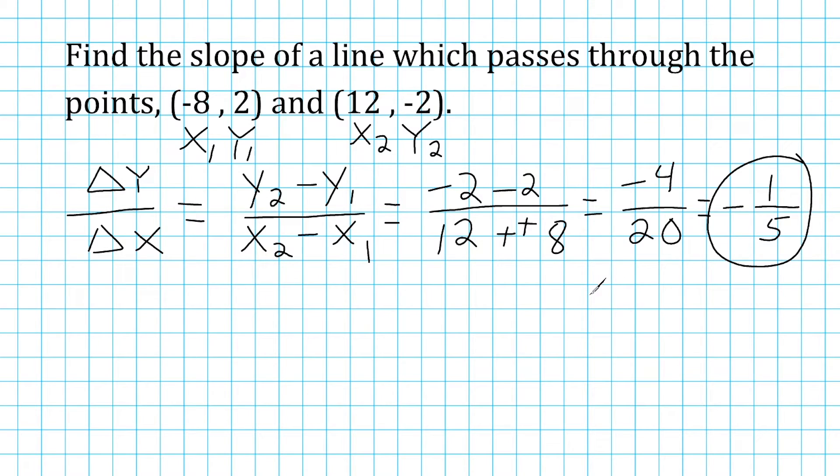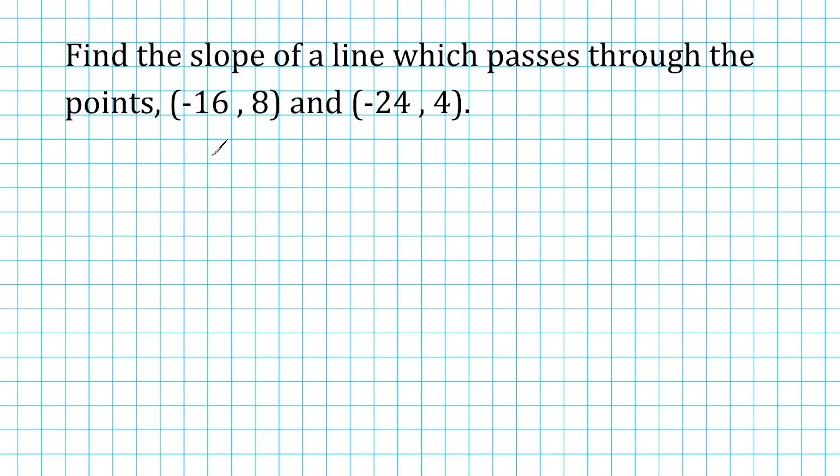All right, let's go ahead and do another example. So I'm going to start off by labeling our ordered pairs x1 and y1 and x2 and y2. And once you get the hang of where things go, you don't have to label these because you'll have the locations memorized. So we're going to start with our y2, which is positive 4, and we subtract from it y1, which is 8. And we're going to put that over the change in our x values, which is going to be determined by negative 24 minus negative 16, which is our x1 value.